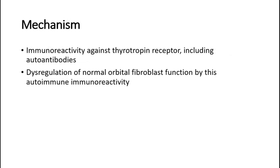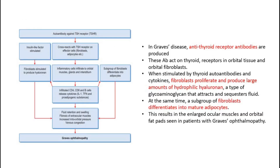For the general mechanism, Graves' ophthalmopathy is due to immunoreactivity against the thyrotropin receptor, including autoantibodies. Dysregulation of normal orbital fibroblast function occurs due to this autoimmune immunoreactivity. The eye signs and their mechanisms will be explained later in this video.